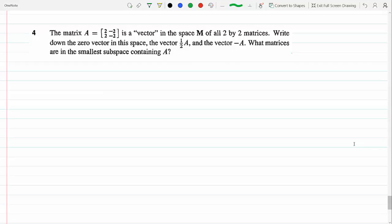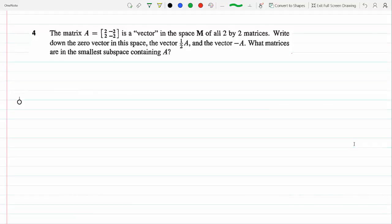Matrix A is a vector in the space M, that's the space M for matrices 2 by 2. The question is write down the zero vector in this space. Okay, so the zero vector is the vector that if we were to add to A, we would get A.